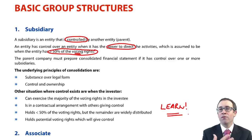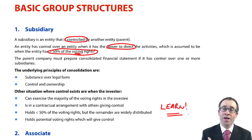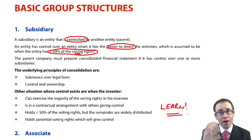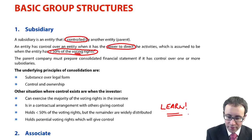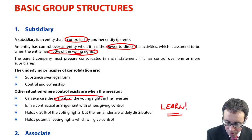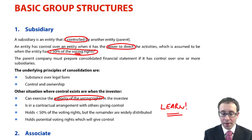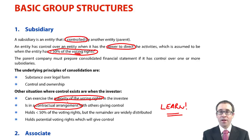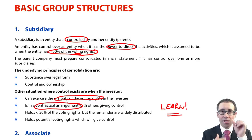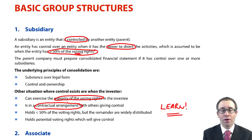What happens if we own 45% or 49% — very close to having control? There are other situations where you could gain control without having 50% of the voting rights. First, if you have the majority of the voting rights — greater than 50% — you have control. However, if you own 45% or 49% but have a contractual arrangement with the other shareholders, and there is a contractual agreement that gives you the controlling votes, then you are exercising your power to direct the activity and therefore have control through that contractual arrangement, even without owning greater than 50%.